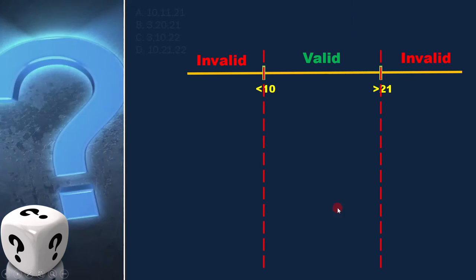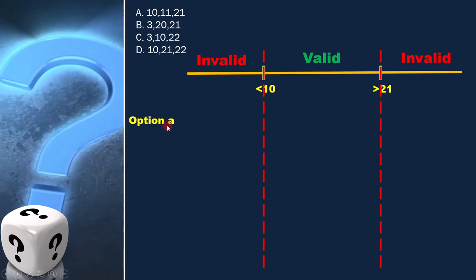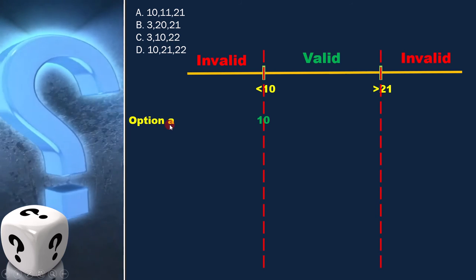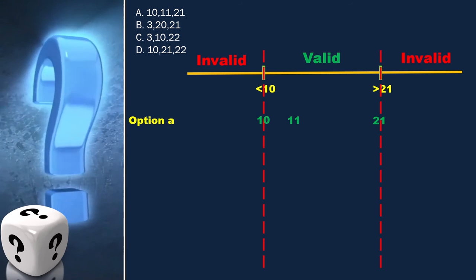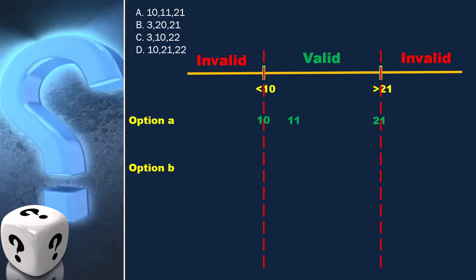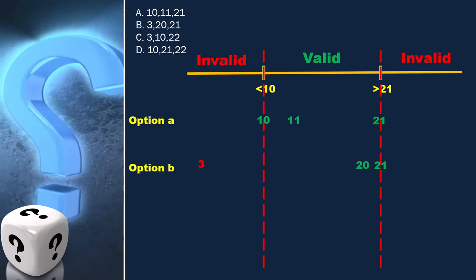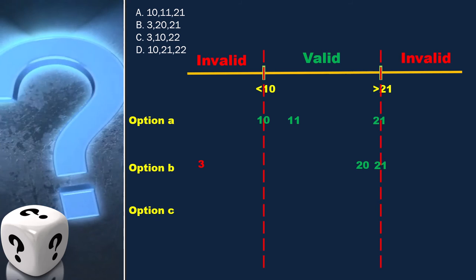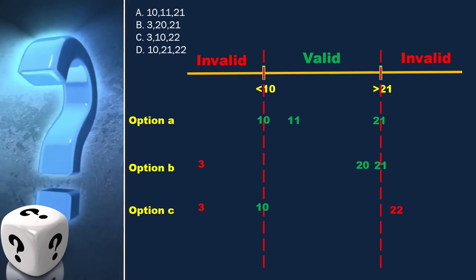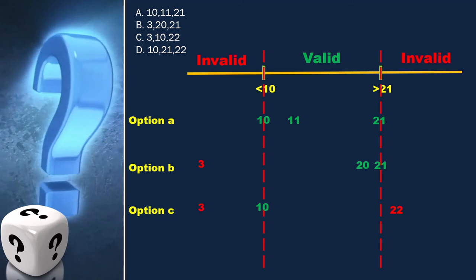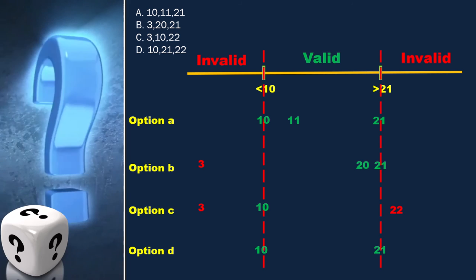Now let's analyze each of the options one by one. Option A is 10, 11, and 21. Option B is 3, 20, and 21. Option C is 3, 10, and 22. Option D is 10, 21, and 2.